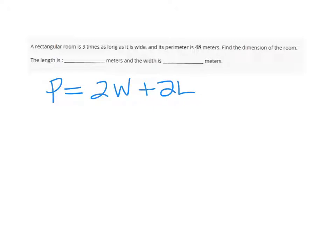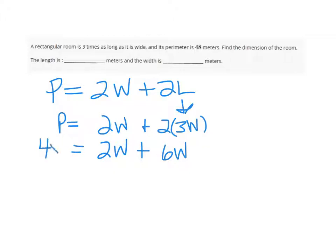So if it is three times as long as it is wide, then it means that L is three times W, so we'll just replace L with three W, and we can distribute and get a 6W there, and our perimeter is actually 48 meters, that's given to us.